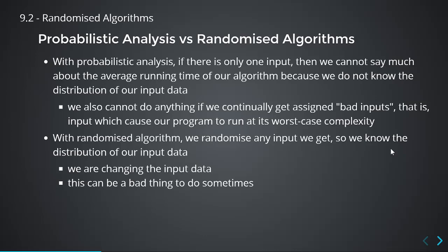With a randomized algorithm, whatever input you get, you randomize it — you change it. So you know the distribution of your data. You can make your input uniformly distributed by randomizing it. So you're not going to get stuck with a whole bunch of bad inputs. Though be aware: sometimes if you're given something random and you try to randomize it further, you actually remove the randomness. Don't mess with probability unless you know what you're doing.